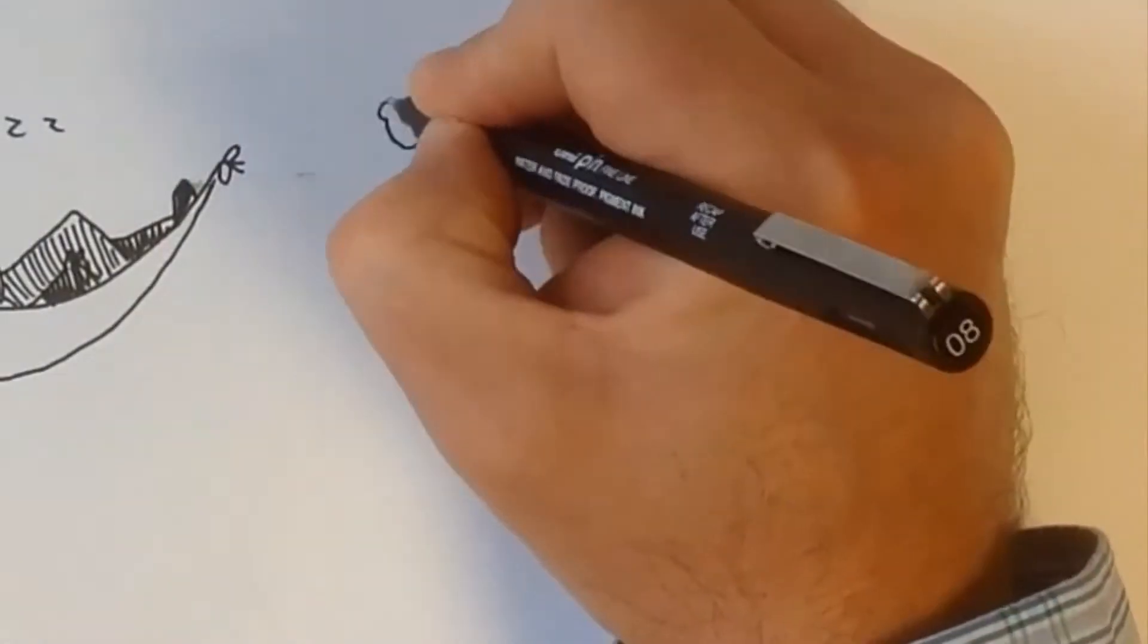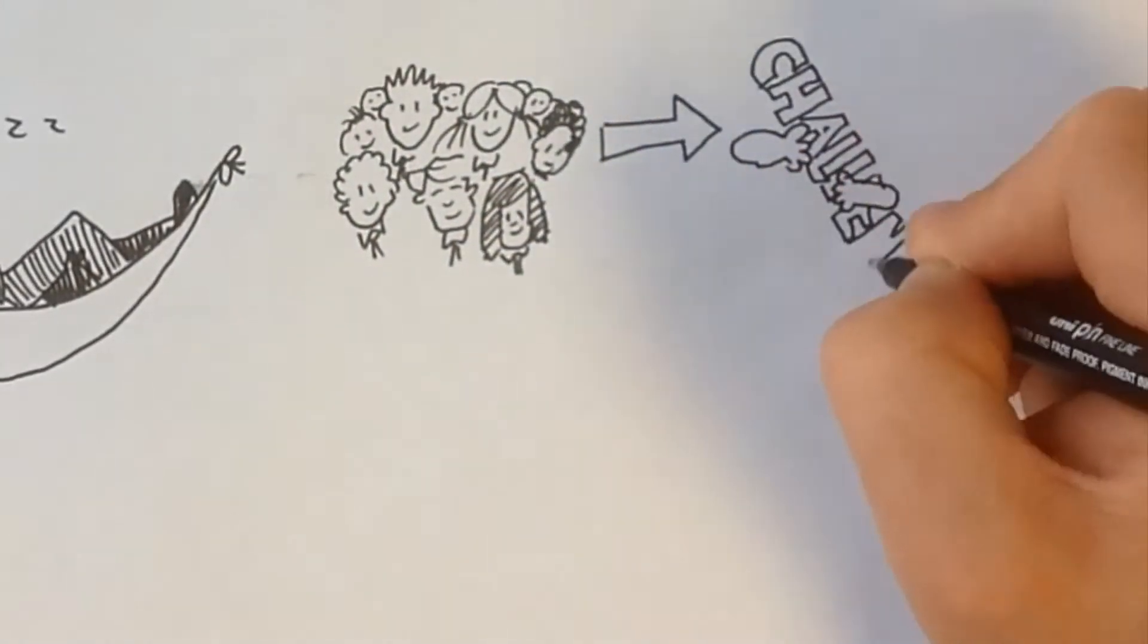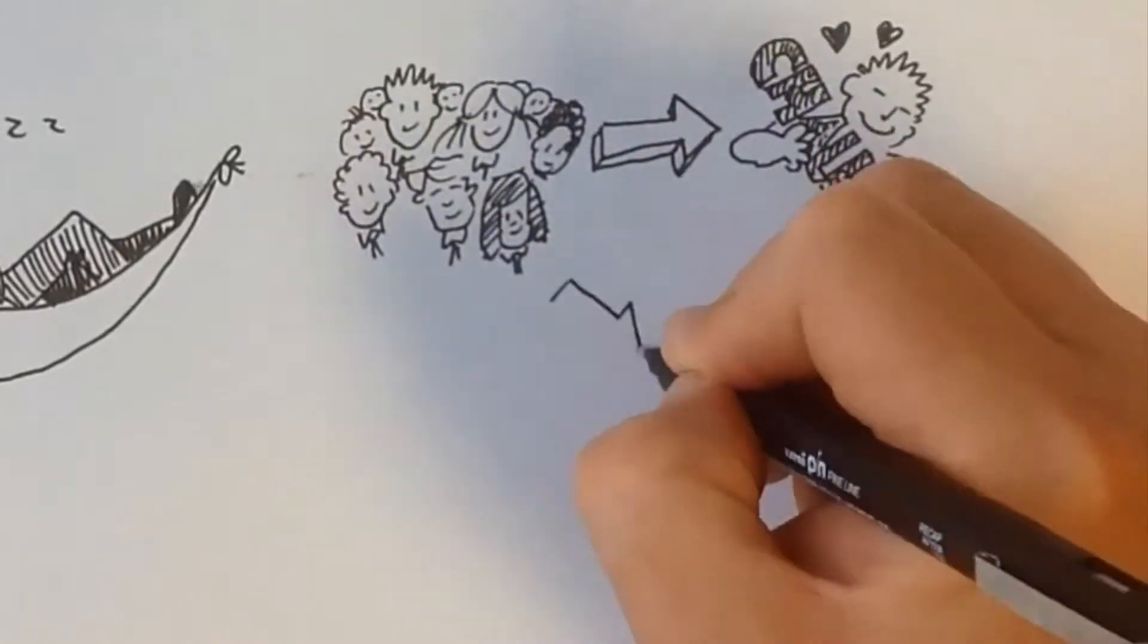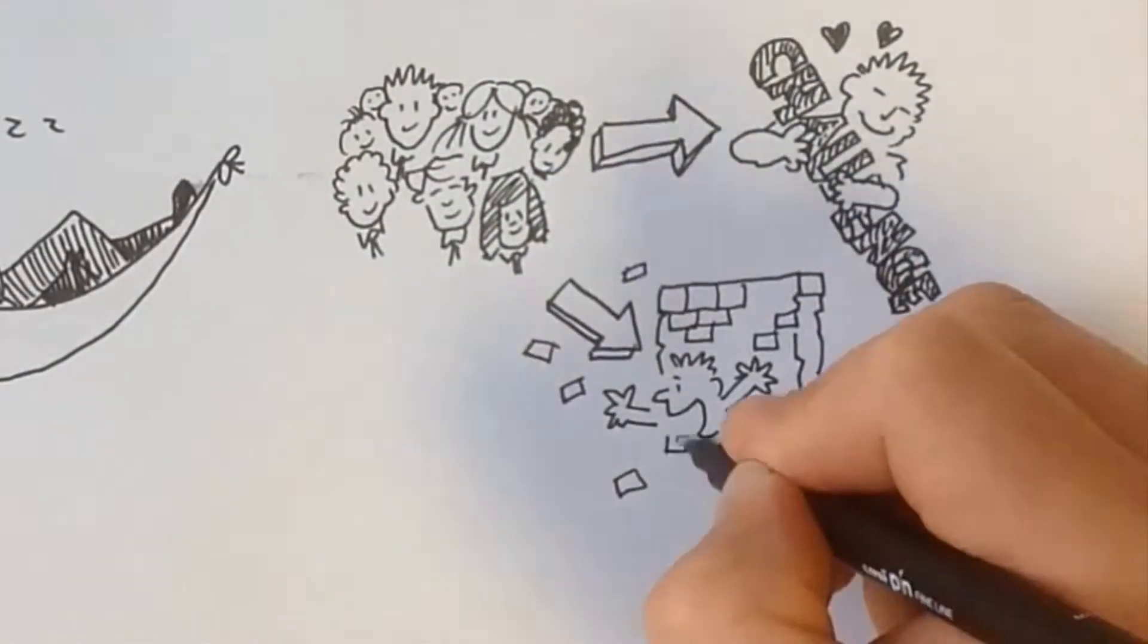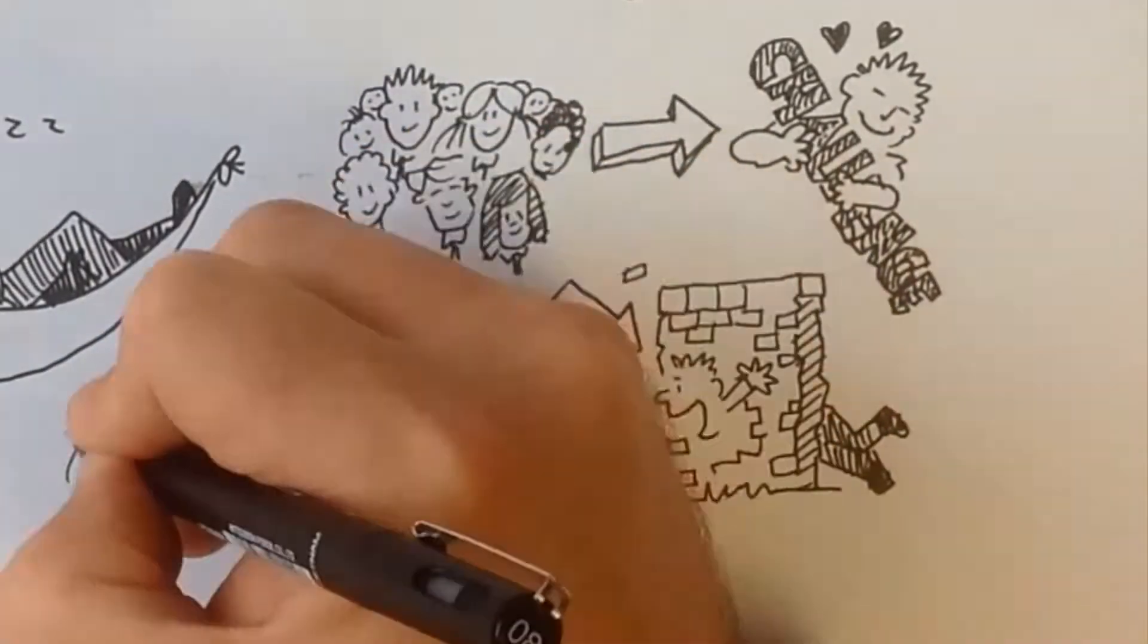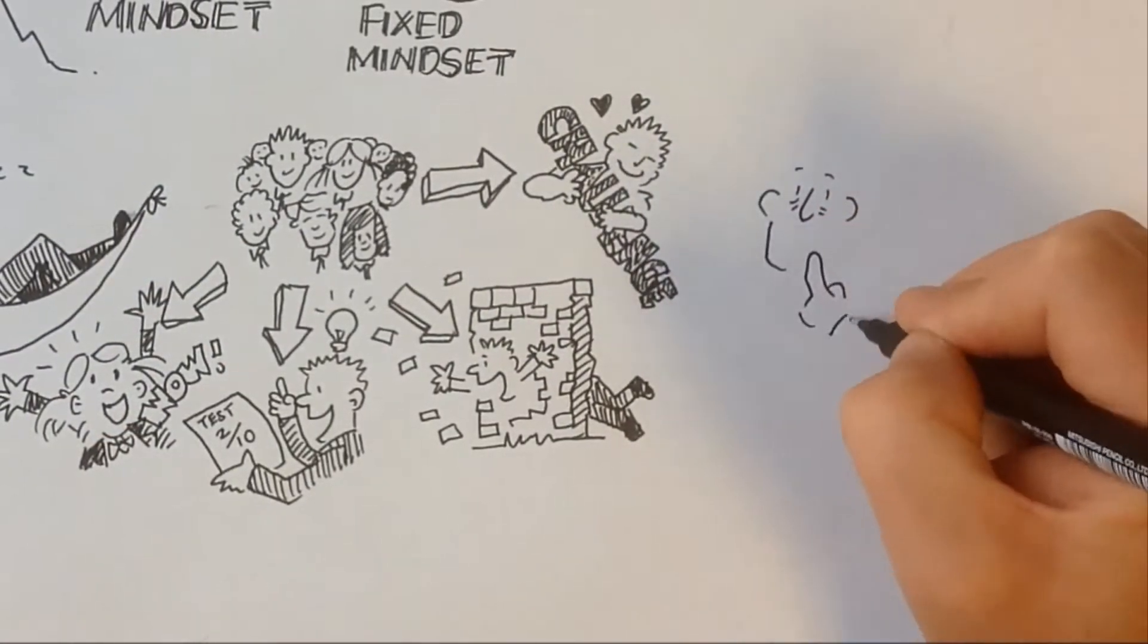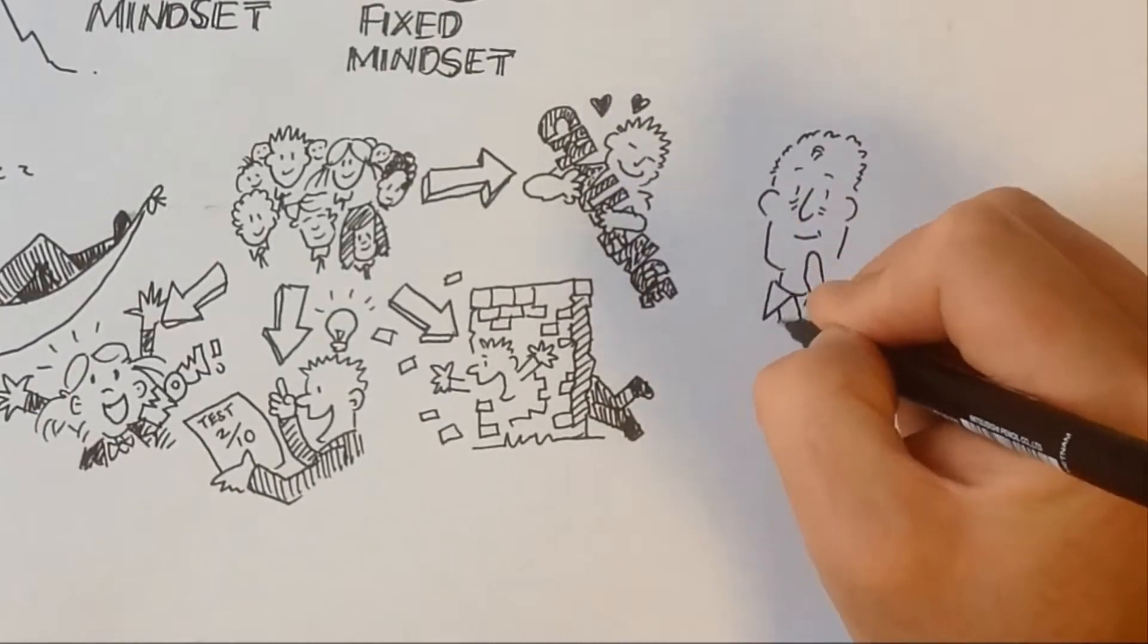So we must encourage all children of all levels of attainment to embrace challenges, persist in the face of setbacks, learn from criticism, and find lessons and inspiration in the success of others. This will give them a greater sense of free will and make them happier and more successful in life.